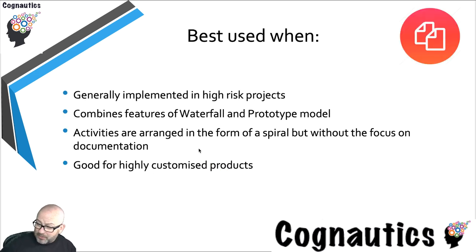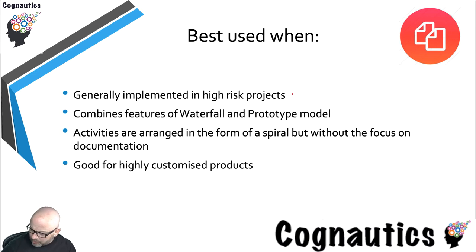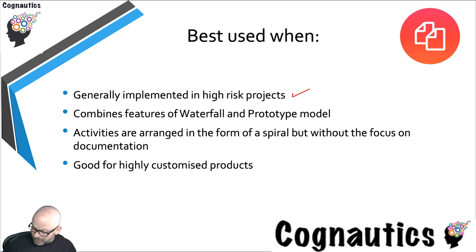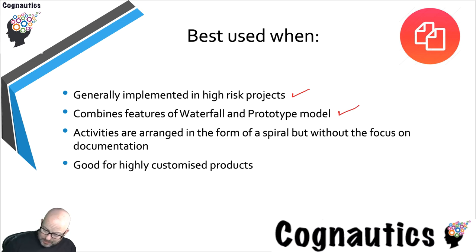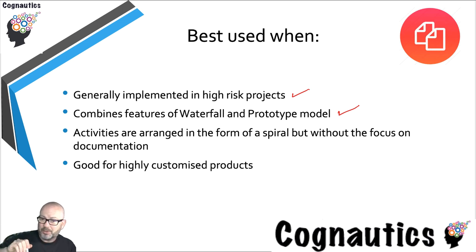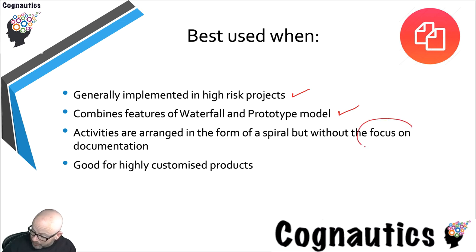The list of when agile is best used and its advantages and disadvantages are generally quite similar to the spiral methodology but there are some differences. It's suited to high-risk projects — if you know what you have to do in advance you don't need to change direction, so you can plan rigidly for a low-risk project. It combines features of waterfall and the prototype just like the spiral, with activities arranged in a plan-prototype-adapt cycle, but there is less focus on documentation.